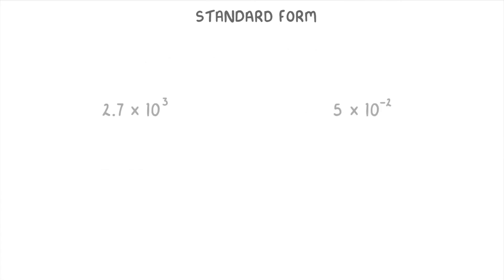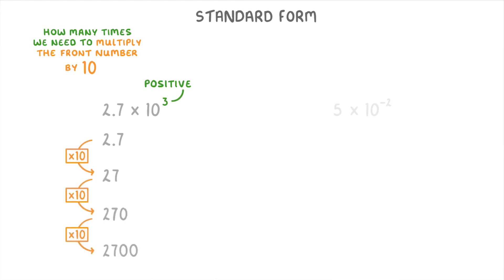Now, the way that standard form works is that if the power is positive, then it tells us how many times we need to multiply the front number by 10. For example, 2.7 × 10^3 means 2.7 multiplied by 10 three times, so we can see that its actual value is 2700.